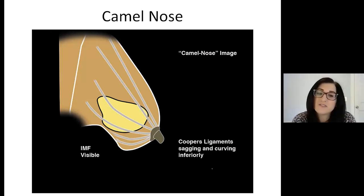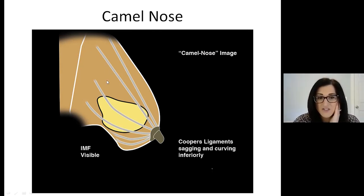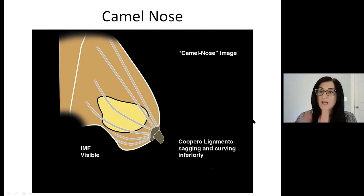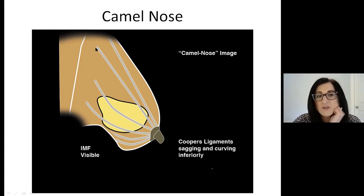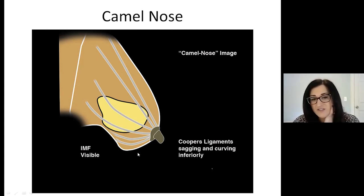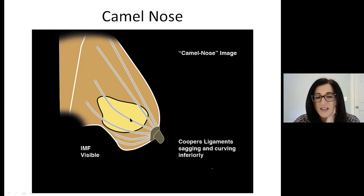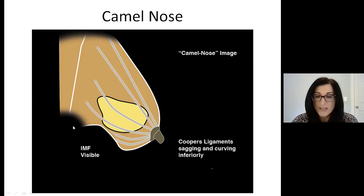Camel nose — I don't have an actual image of this, so I have a mock-up. As you can see, everything is sagging. The nipple is pointing down when it should be up and out. The compression, nipple, and breast tissue should all be directed up and out from the chest wall. With camel nose, it's down, out, and sagging — there's no nice straight line or convex curve to the bottom of the breast, the nipple is pointing down, Cooper's ligaments are sagging, and the IMF is non-existent. These are all signs of camel nose and inadequate compression. And that is it for quality determinants of mammography.